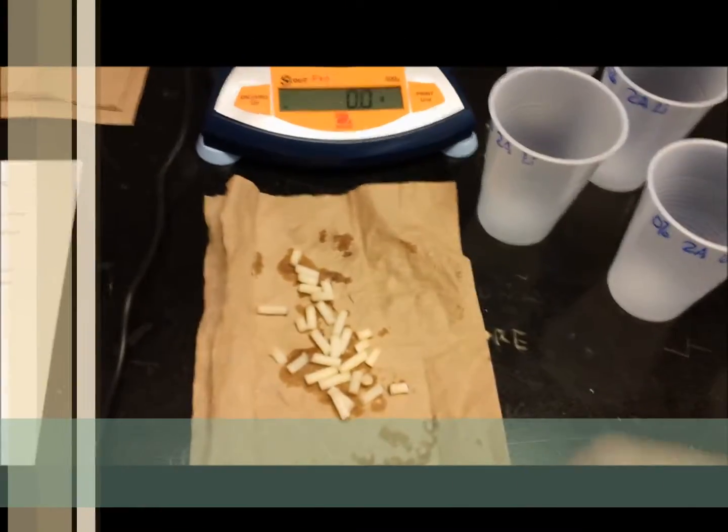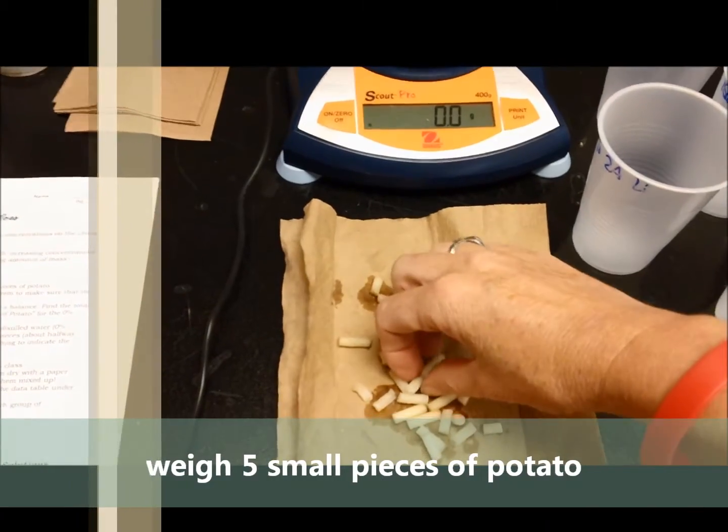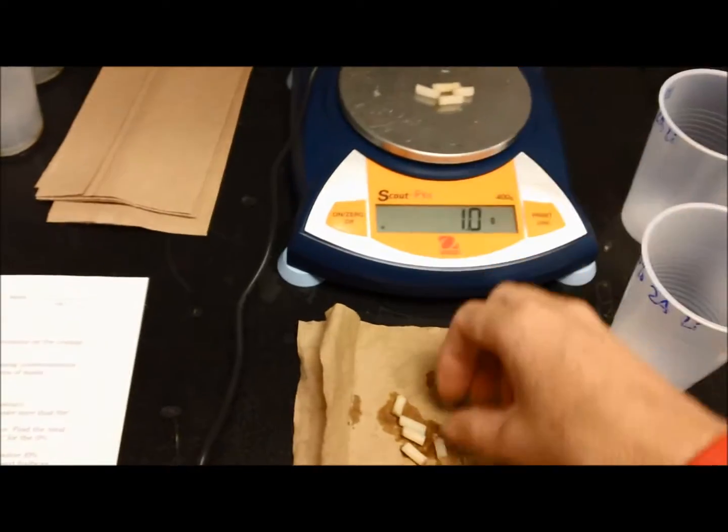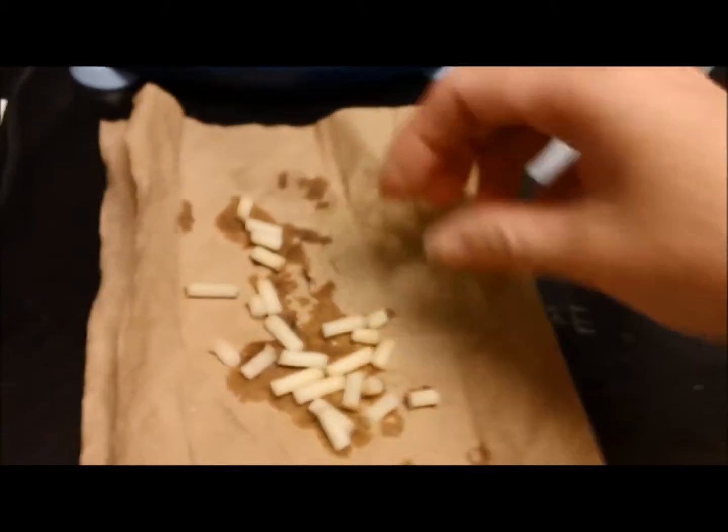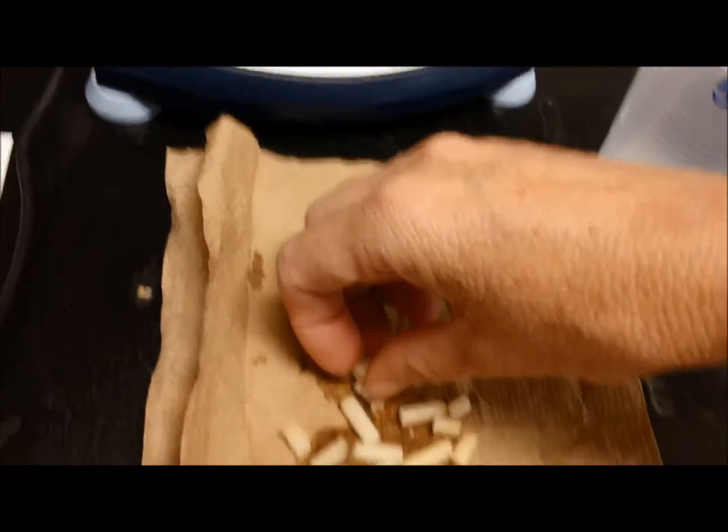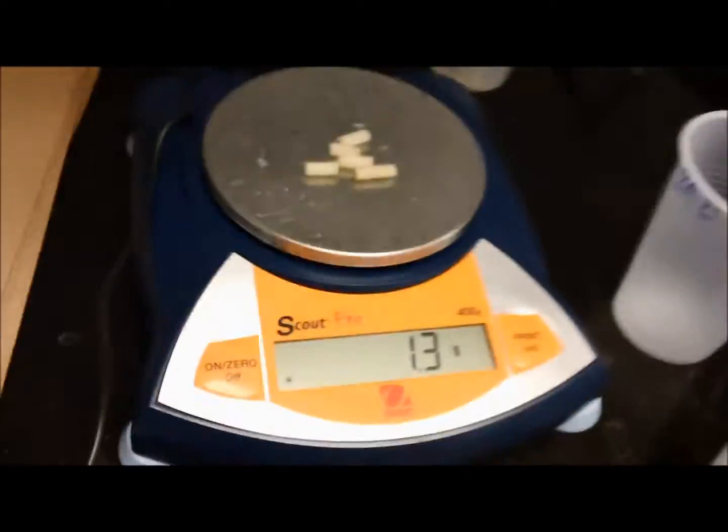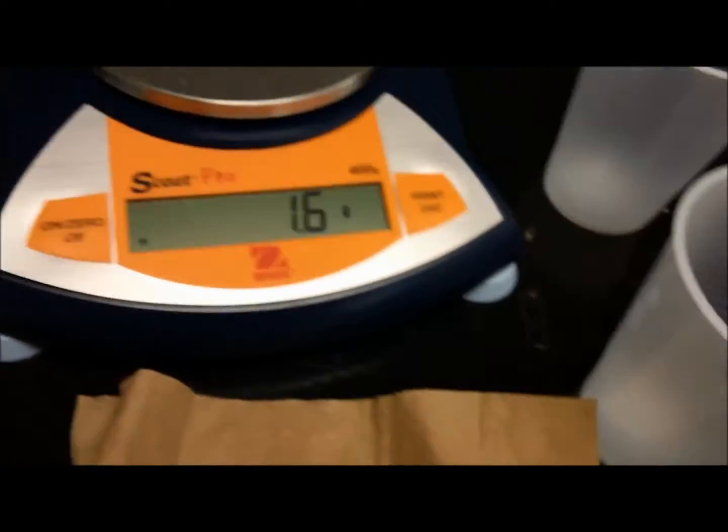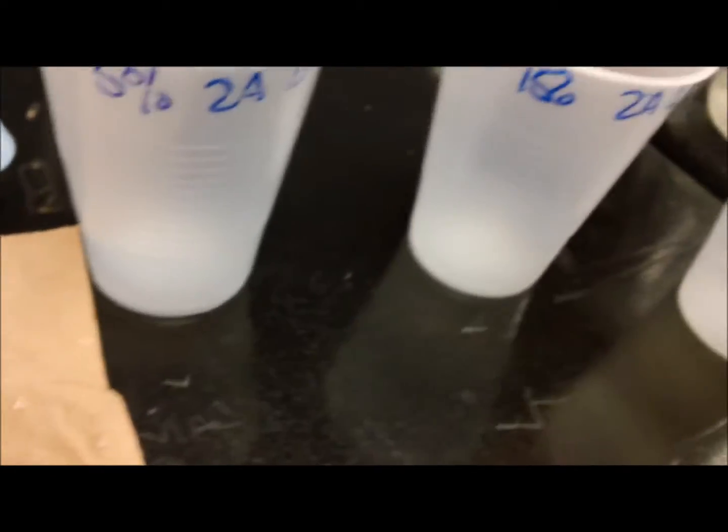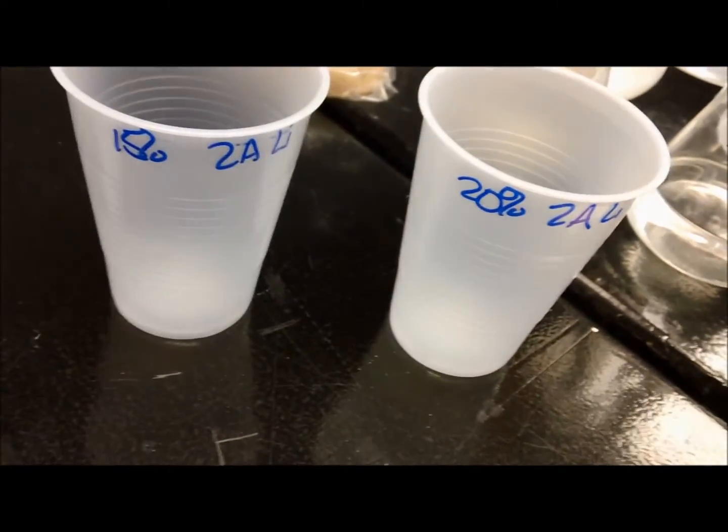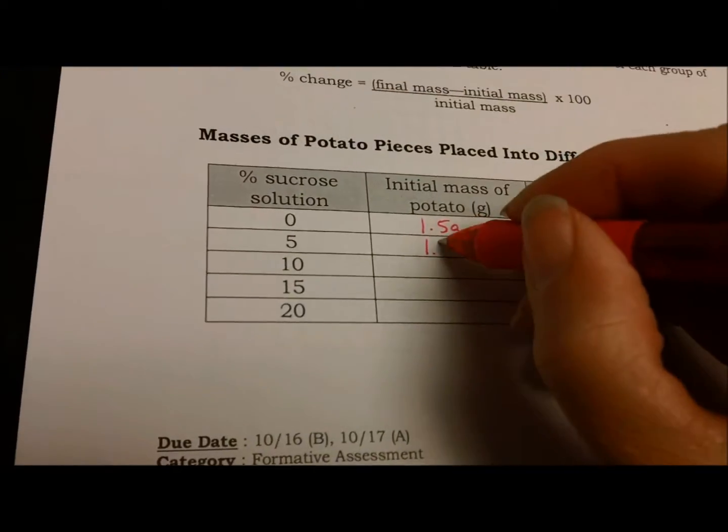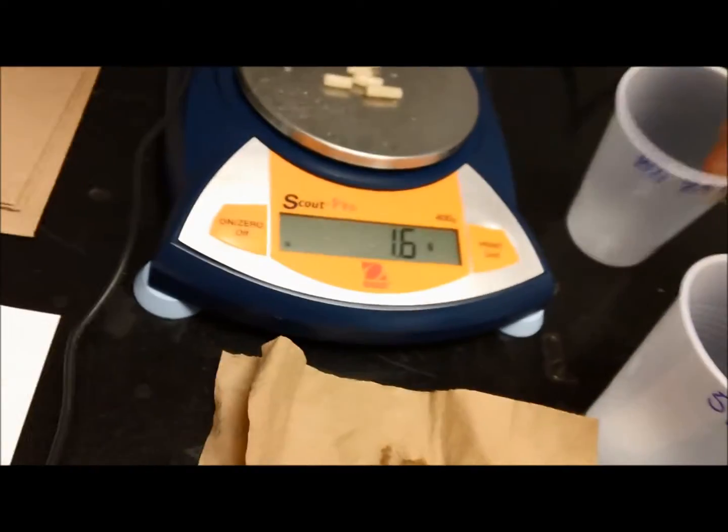Start by weighing out five of the small pieces of potato on the digital scale. Repeat this for the next four solutions: the 5%, the 10%, the 15%, and the 20% sucrose solution. Make sure you record each one before you add the solution.